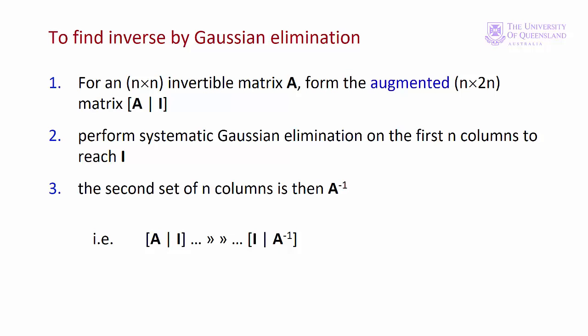Now let's see how we can find an inverse. The inverse captures the elementary row operations applied in deriving the solution to a set of equations. We use an augmented matrix with the matrix of interest on the left-hand side and the identity matrix on the right-hand side, giving an n by 2n matrix. We perform elementary row operations until we have an identity matrix on the left. The right-hand side is then the inverse. So we start with augmented matrix [A|I] and end with [I|A⁻¹].